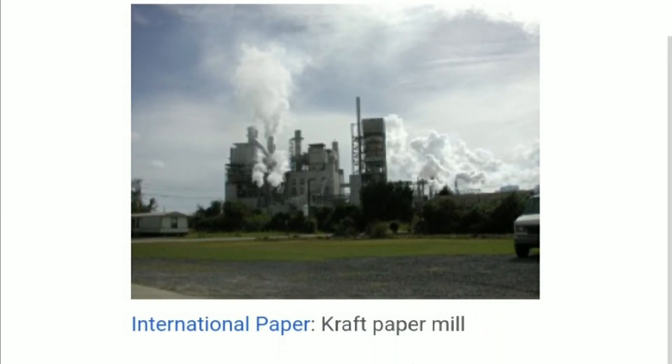There is a picture of an international paper craft paper mill. What does a paper engineer do? Pulp and paper engineers typically focus on the engineering aspects of the manufacturing process. They design and optimize the equipment and processes used to convert wood, recycled paper, or other raw materials into pulp and then into paper products.